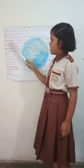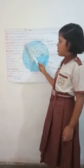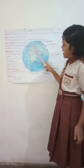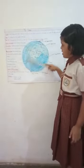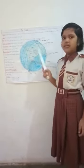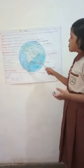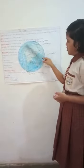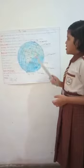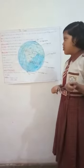Latitudes and longitudes. The vertical lines on the globe are called longitudes, and the horizontal lines on the globe are called latitudes.